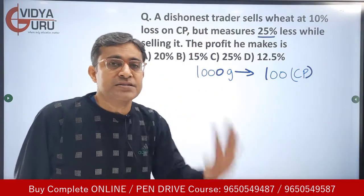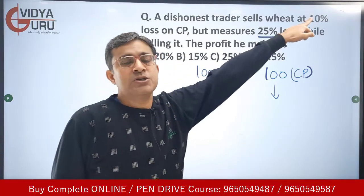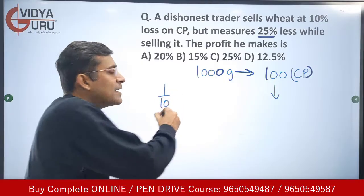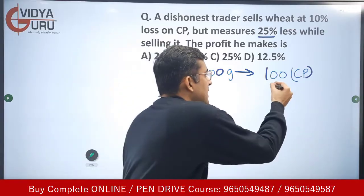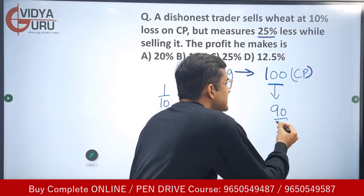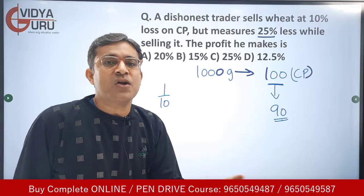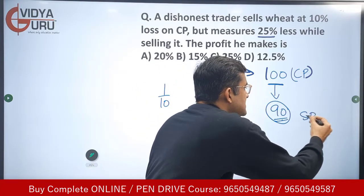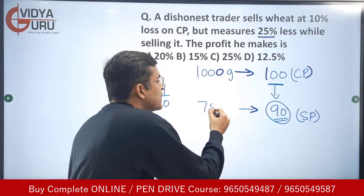The cost price is rupees 100. While selling, he claims a 10 percent loss — 10 percent is 1 by 10, so 1 by 10 of 100 is 10 rupees loss. Therefore the selling price is 90 rupees. But this selling price of 90 rupees is for only 750 grams, because he is measuring 25 percent less.